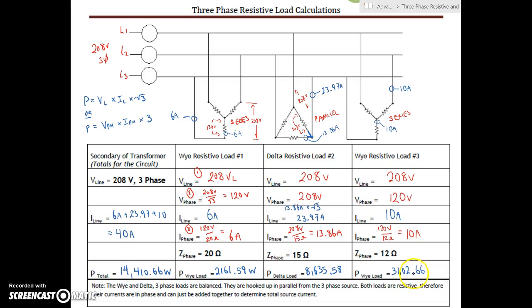If you add up the 3,602.66 and this value, 8,635.58 and the 2,161.59, you will get a value that's very close to the 14,410.66. Keep in mind rounding and everything. We went through all of our steps here. This was step one to find the line voltage. Second step here was to find our phase voltage. Then we found our phase current. Step four here was to find each of our individual line currents. Step five, we added all those up. And then step six, we found all of our individual power values, and we found that using this equation of V line times I line times root 3.